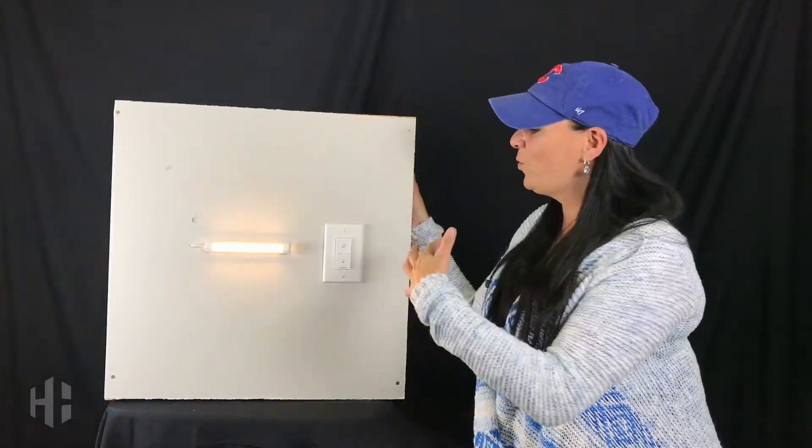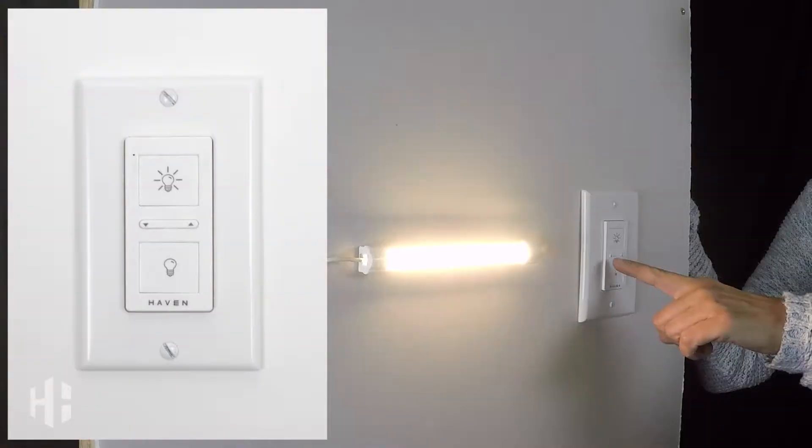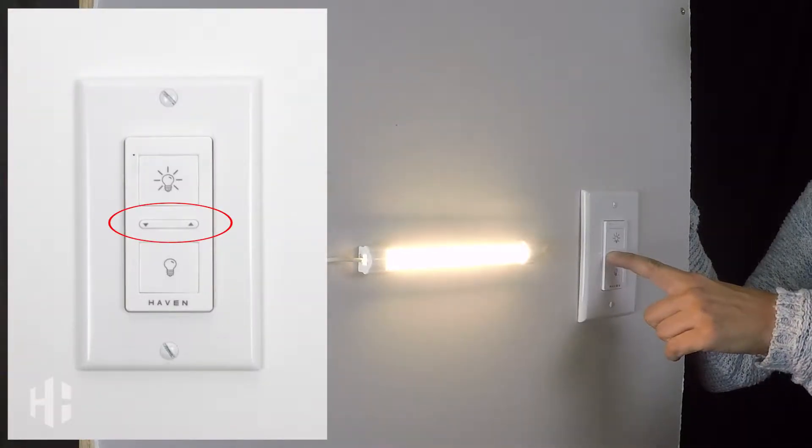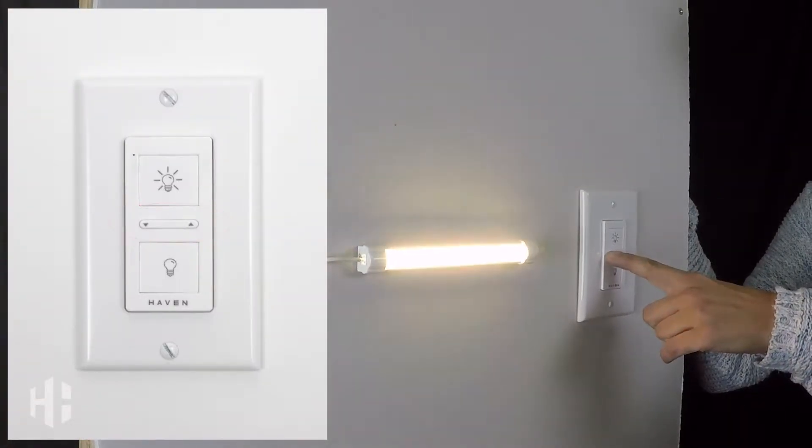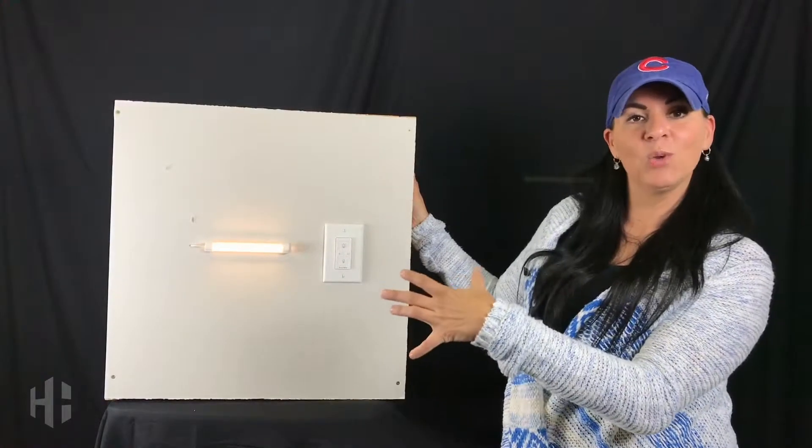And then when you want to dim it, you simply have a down arrow and an up arrow. Press it until you get the desired light that you want.